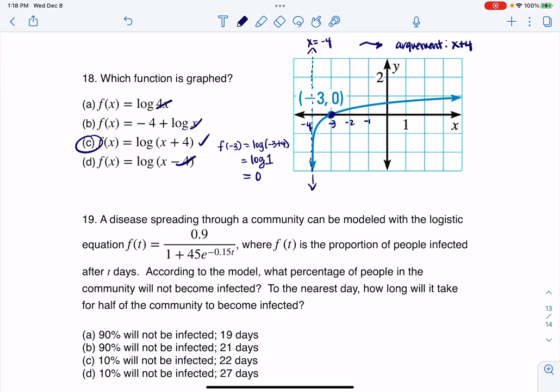And you could always check it. If you tried plugging in f of negative three, you would have log of negative three plus four, and that would be log of one. Anytime you have your argument of one, that log is zero.